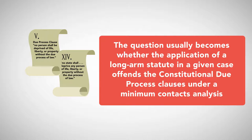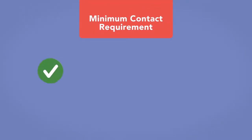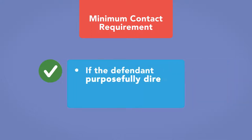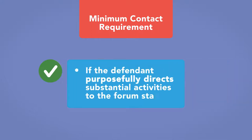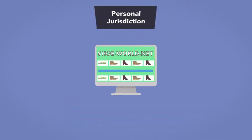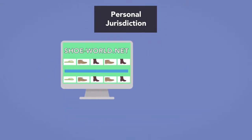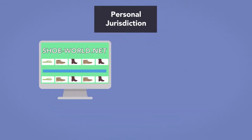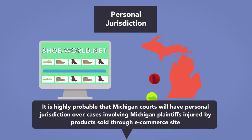The minimum contacts requirement is also considered satisfied if the defendant purposefully directs substantial activities to the forum state. So for example, if an e-commerce website routinely sells goods to buyers in Michigan, it is highly probable that Michigan courts will have personal jurisdiction over cases involving Michigan plaintiffs injured by products sold through that e-commerce site.